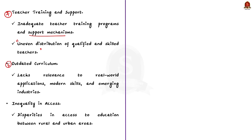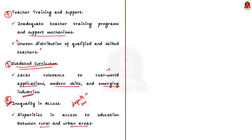The fifth issue is the outdated curriculum. Not only does our school curriculum lack a comprehensive approach, it is also majorly outdated. It often lacks relevance to real-world applications, modern skills, and emerging industries, and mostly fails to keep pace with changing societal needs and technological advancements. Finally, the sixth issue is inequality in access — disparities in access to education between rural and urban areas, as well as among different socio-economic backgrounds, contribute to an unequal educational landscape.